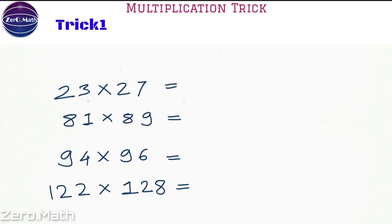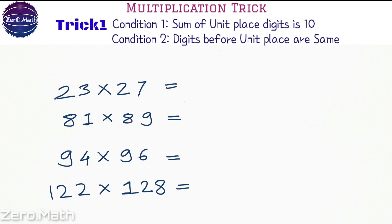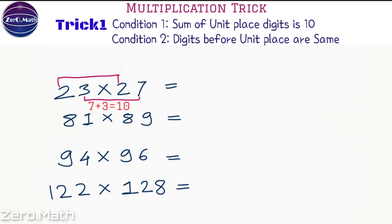Trick one can be applied when the sum of the unit place digits is 10 and the digits before the unit place are the same. So in this case you can see the sum of the unit place digits — 3 and 7 — is 10, and the digit before the unit place is 2, which equals 2. Hence we are good to apply this trick.